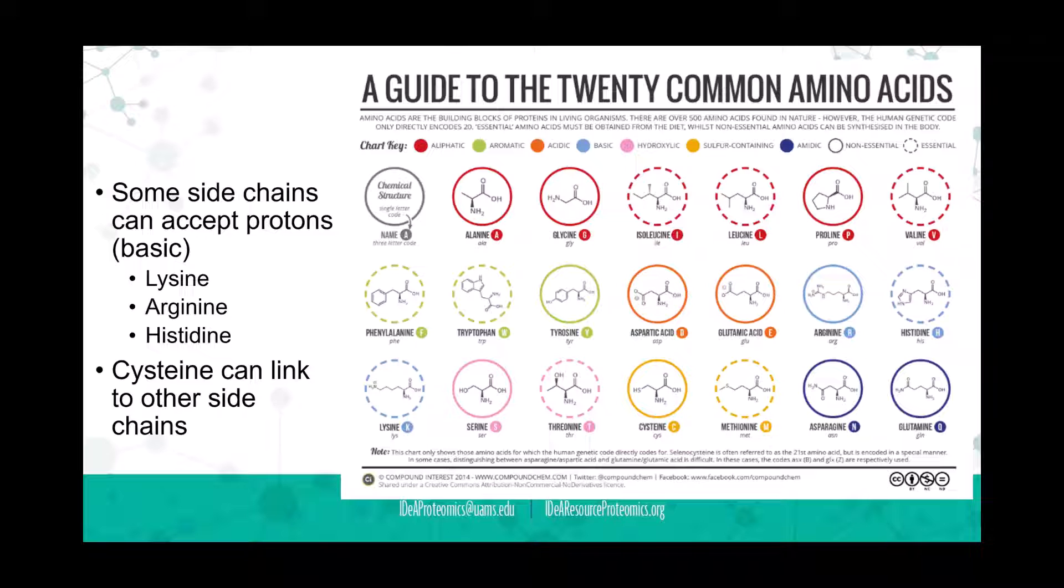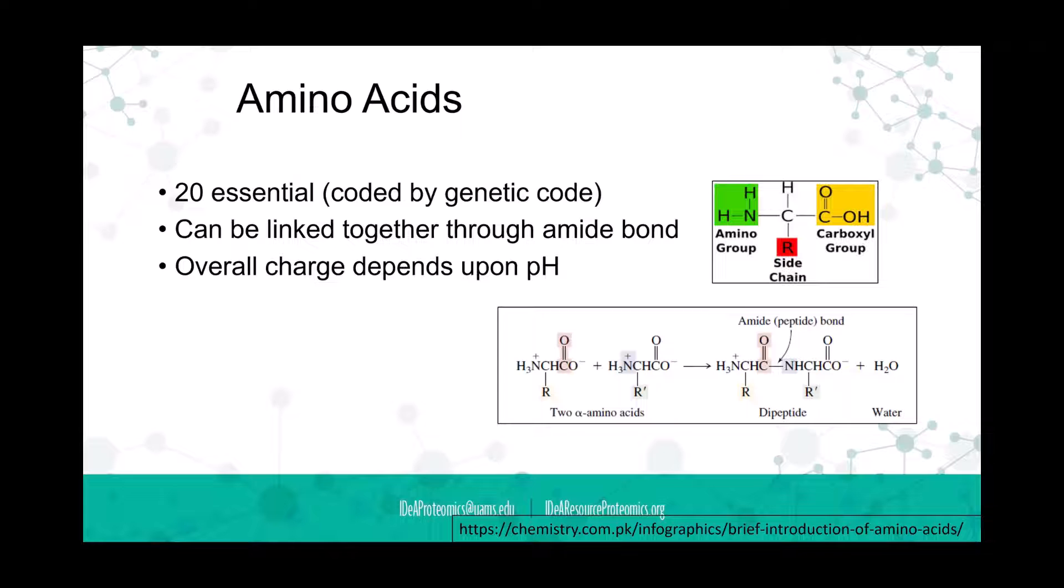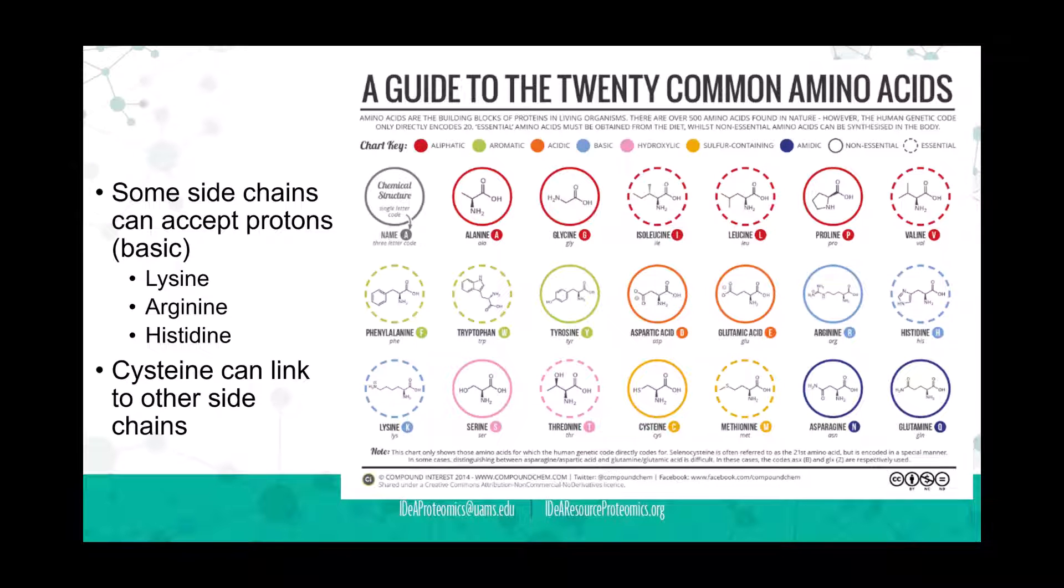Those 20 amino acids are something you have to memorize in a basic biochemistry class. They have a code that's a single letter—for instance, alanine is A and glycine is G. There's also a three-letter code, so alanine could be Ala and glycine could be Gly. The structure is the same for all amino acids except for that fourth group, what we call the R or side chain, which is the only thing that's really different between all the different amino acids.